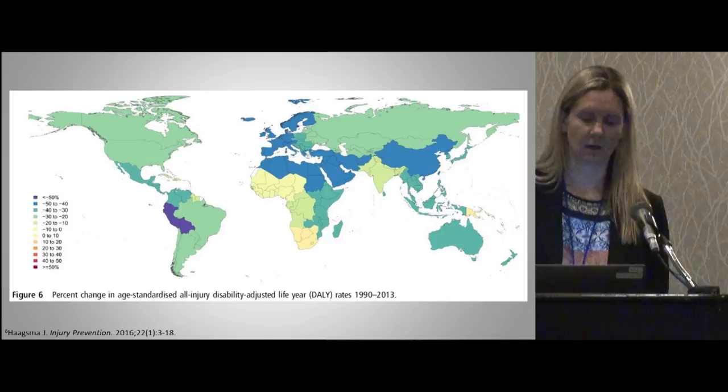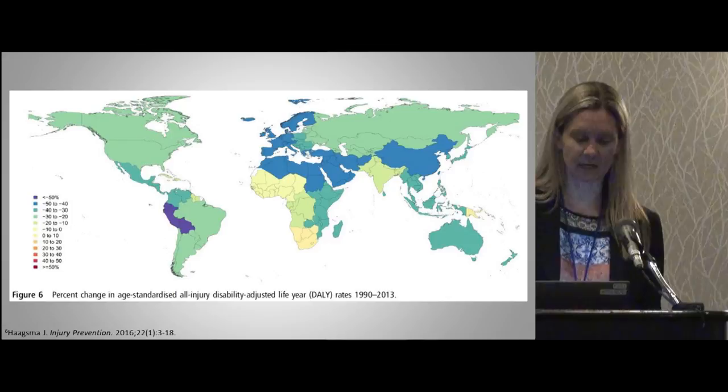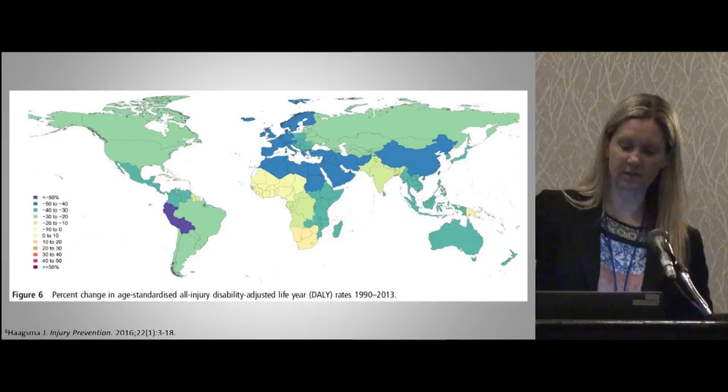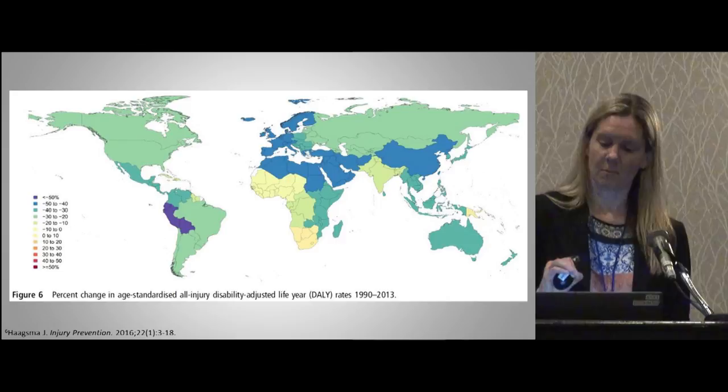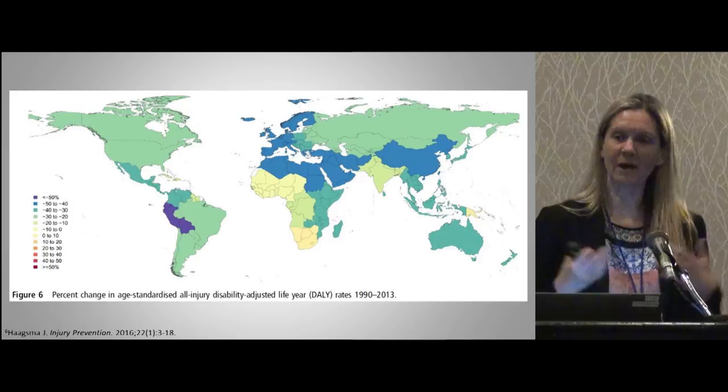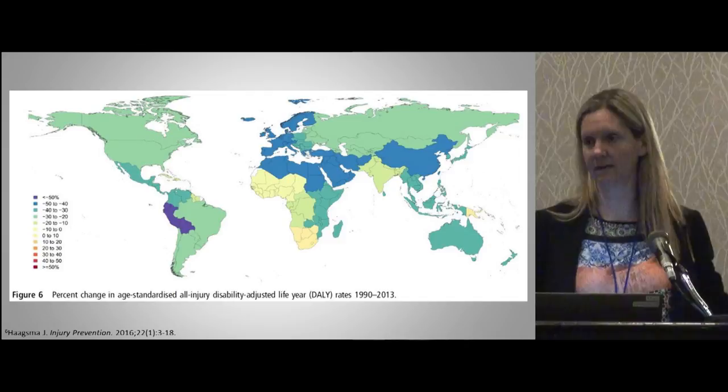Are we making any progress? Looking at disability-adjusted life-year rates — comparing 1990 to 2013 — countries shown in green, purple, and blue have all made progress. But some countries shown in yellow, like parts of Oceania and parts of South Africa, are doing worse over those 23 years. As high-income countries improve and the worst-off countries decline, the disparity grows even larger.